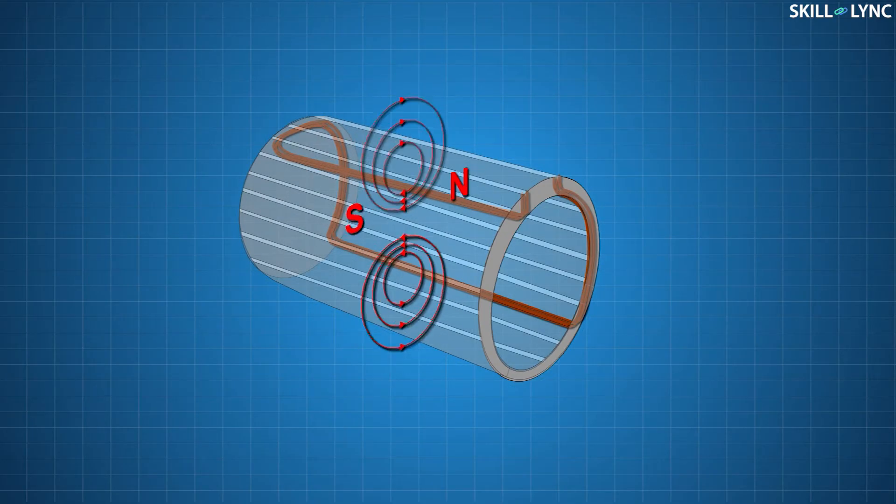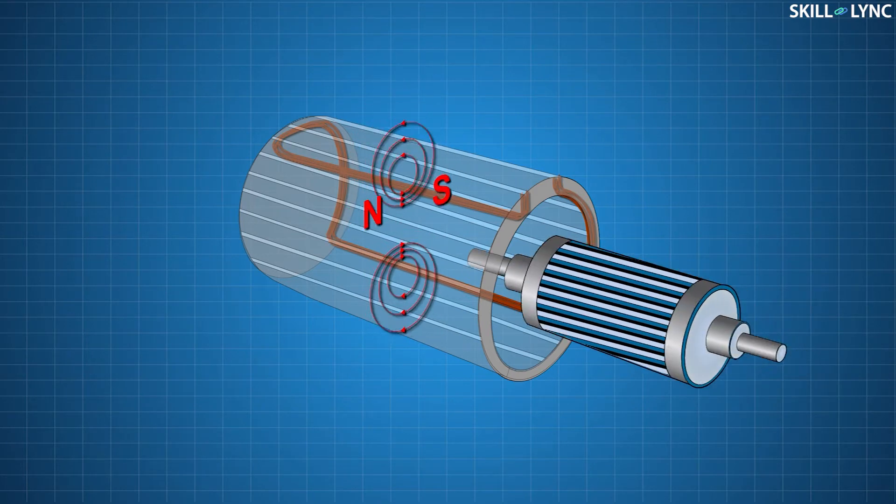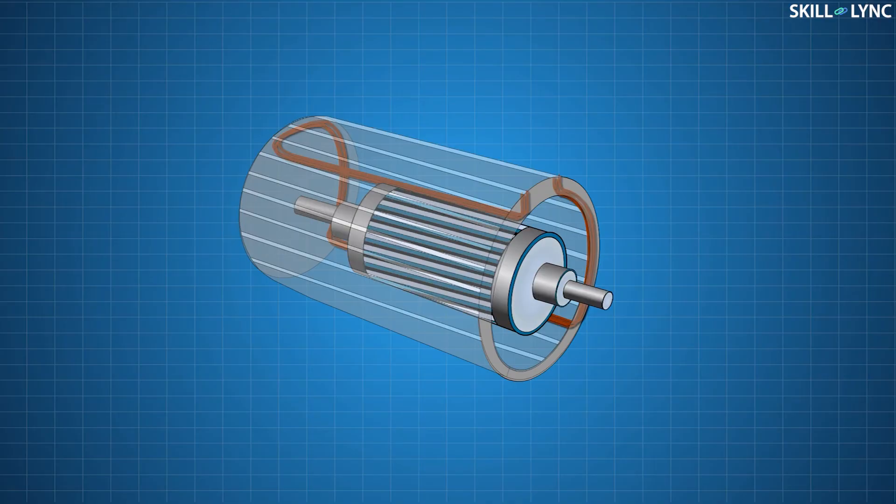This single phase AC supply produces an alternating magnetic field in the main winding. This alternating magnetic field gets induced in the rotor by the principle of electromagnetic induction. The rotor now has a magnetic field.